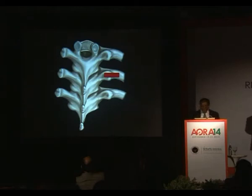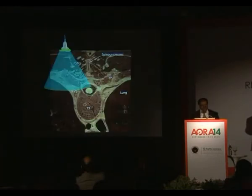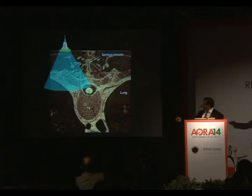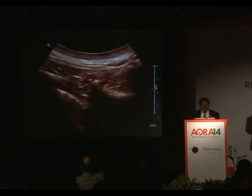At the transverse process level, you move the transducer below the rib, and this is the window that has been described in the literature. You will see here how the window is created at the transverse process. But as you can see, the triangular paravertebral space is in the shadow of the transverse process.